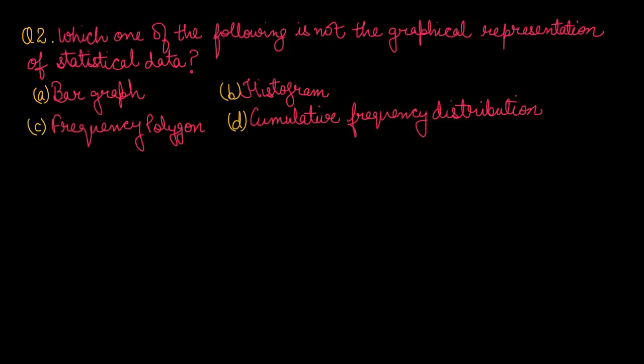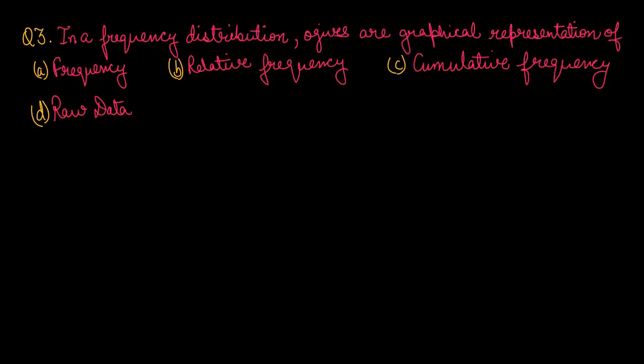Question number 2: Which one of the following is not a graphical representation of statistical data? Bar graph is a graphical representation. Histogram is a graphical representation. Frequency polygons use midpoints. Cumulative frequency distribution is not a graphical representation on graphs. So option number D is the right one.